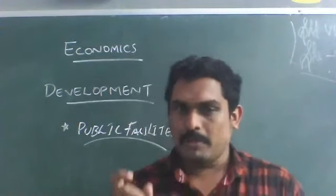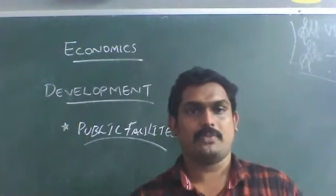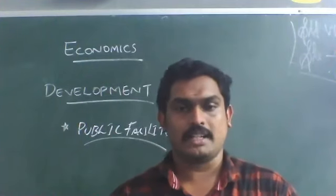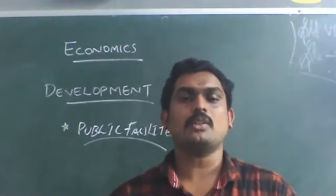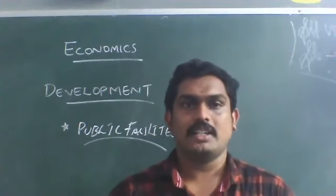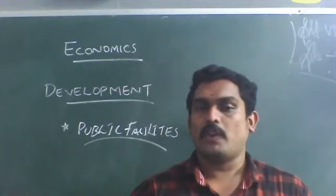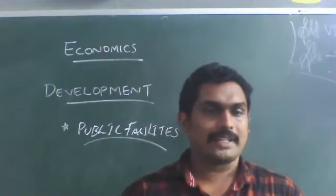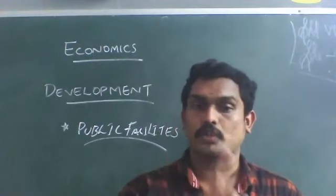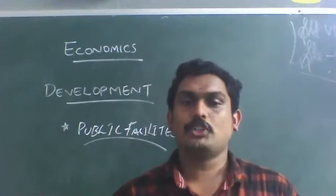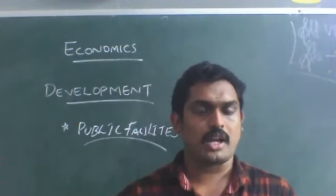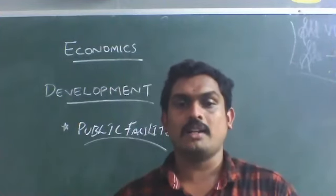The Human Development Index is published by UNDP, and countries are evaluated on the basis of development indicators. The HDI is a composite statistic of life expectancy, education, and per capita income. These are the main indicators of human development according to the UNDP, and achieving these — per capita income, healthcare facilities, and education — is the goal.